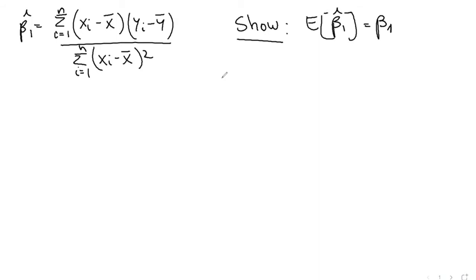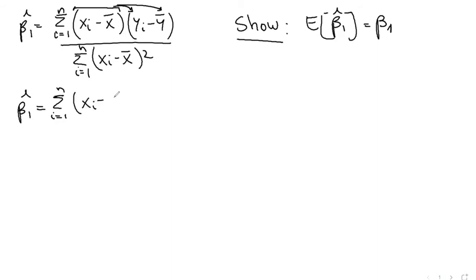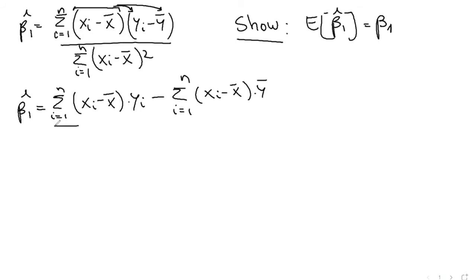First, we're going to grab the formula for our β̂₁ and simplify it slightly. We're going to distribute this term and then distribute this summation to see what we get. This is going to be the sum from i equals 1 to n of (xᵢ minus x̄) times yᵢ, minus the summation from i equals 1 to n of (xᵢ minus x̄) times ȳ. And all of this has to be divided by the sum of squares of x.